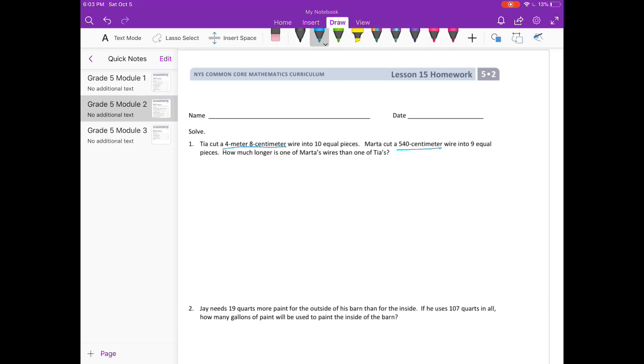We know that one meter is equal to 100 centimeters, so four meters would be equal to 400 centimeters. Plus the eight centimeters here would get us 408 centimeters. That's Tia, and she cuts hers into 10 equal pieces. So if we divide that into 10 equal pieces, we will get 40.8 centimeters for Tia.